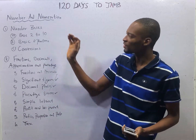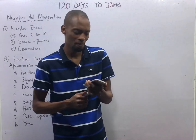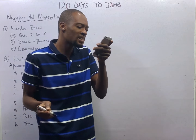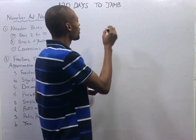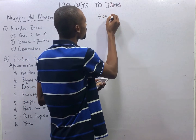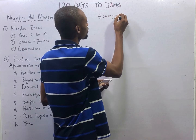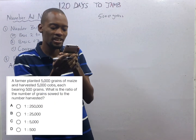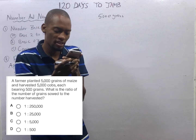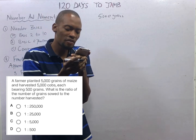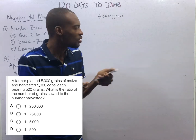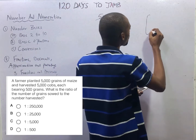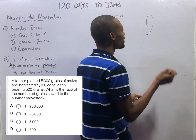The first two parts of number and numeration. The question says: a farmer planted 5,000 grains of maize and harvested 5,000 cobs, each bearing 500 grains. Think of corn — the full cob and each seed is a grain.